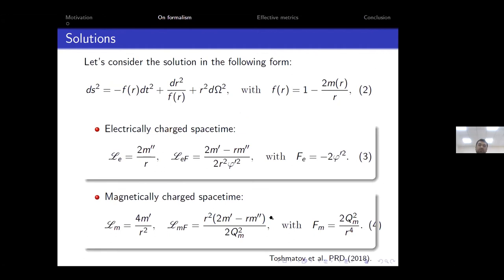At this point, the session chair briefly interrupts to ask the speaker to lower his volume due to an echo. After a short adjustment, the audio quality improves and the speaker is asked to continue from where he left off.